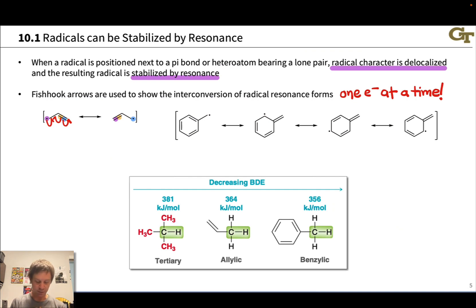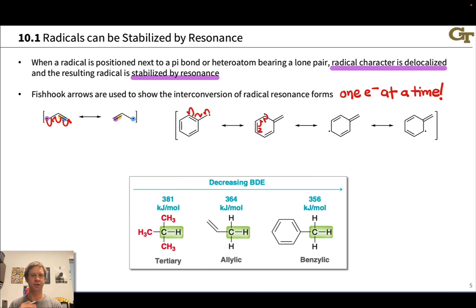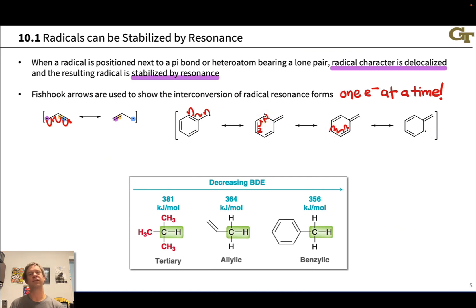The benzylic radical, which has a radical adjacent to a benzene ring, is even more stable and has even more resonance forms derived from very similar electron flow to what we saw in the allyl radical. For example, we can shift radical character over using electron flow, putting a new pi bond between two carbons, and continue pushing electrons to generate a third and fourth resonance form. The radical character is delocalized over the original radical position as well as other positions on the ring — highly delocalized radical character makes the benzylic radical quite stable.